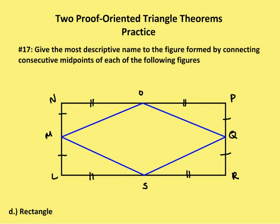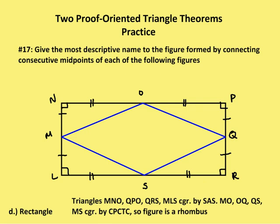Next is a rectangle. I'm going to join the midpoints of the sides of a rectangle. Triangles MNO, QPO, QRS, and MLS are all congruent by side-angle-side, for the same reasons the triangles in the square were congruent. So MO, OQ, QS, and MS are all congruent by CPCTC. I have a parallelogram, which ends up being a rhombus — I have at least two consecutive sides of the parallelogram that are congruent. The most descriptive figure resulting from connecting the midpoints of a rectangle is a rhombus.